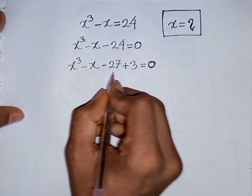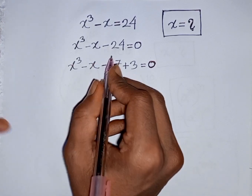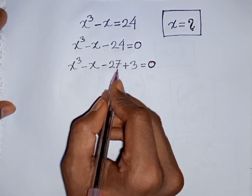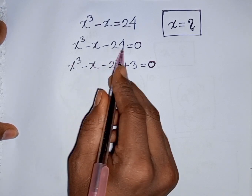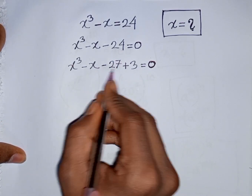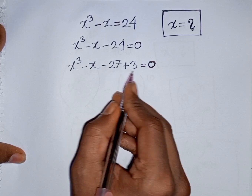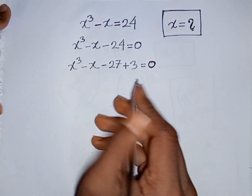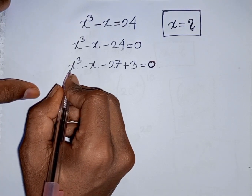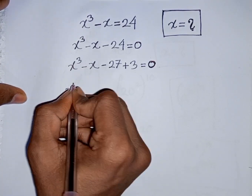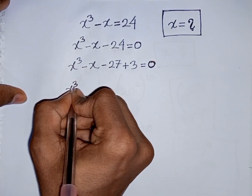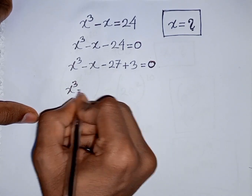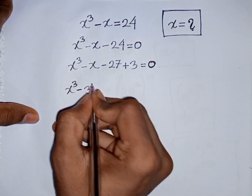How to understand this? Pay attention here. The nearest cubic number of 24 is 27. So you can write minus 24 as minus 27 plus 3. Now we have x³ minus 27, which is the same as minus 3³.